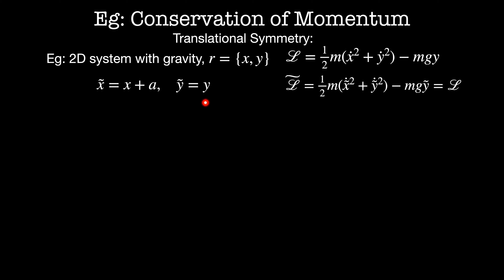On the other hand, y goes to y plus b is not a symmetry of the Lagrangian. This is because the gravitational potential energy depends on y. So the potential energy at y is not the same as the potential energy at y tilde equals y plus b.